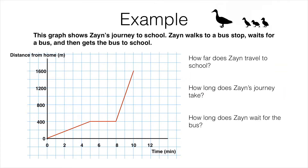The first question asks how far Zane travels to school. The line ends when he has traveled a distance of 1,600 meters, so the answer is 1,600 meters.